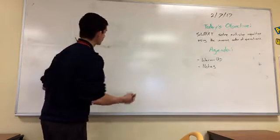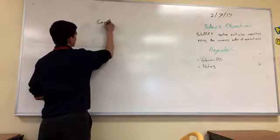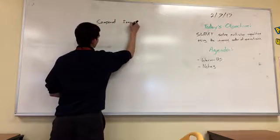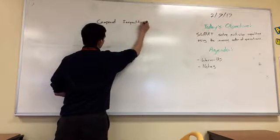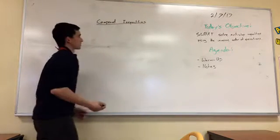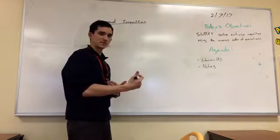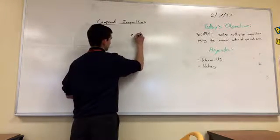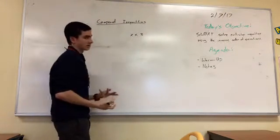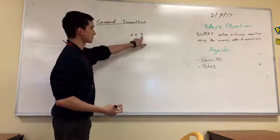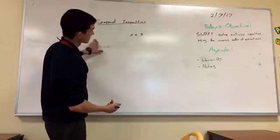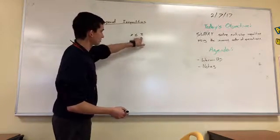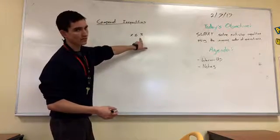What I mean by compound inequalities is an inequality that has a limitation on both ends. So for example, if I say x is less than 3, that's just the typical inequality — it has a limitation of 3, meaning x is anything smaller than 3. If I put less than or equal to, x can equal 3 or is smaller than 3. Still only one limitation.